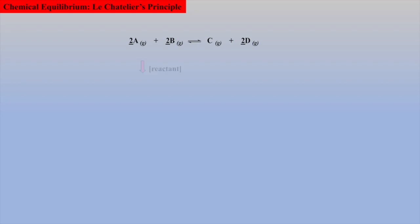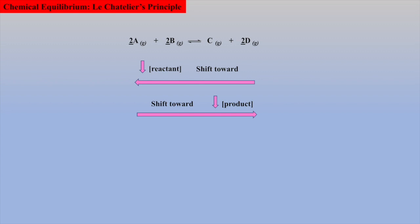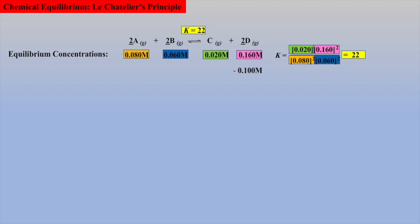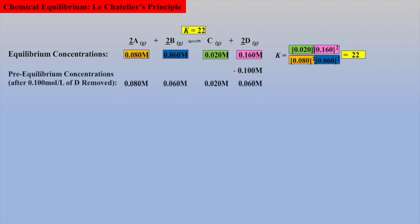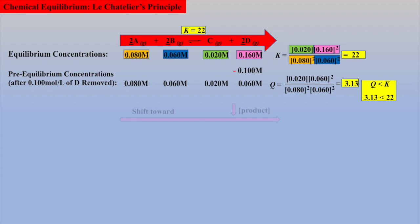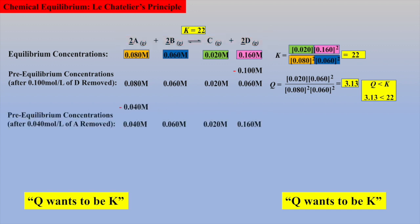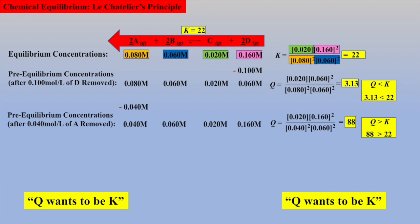Now let's mathematically prove that if we lower the concentration of a reactant or of a product, the shift will be toward the removal. In this conceptual reaction, let's assume these equilibrium concentrations and calculate a K value for this temperature. If we remove some of product D, then using these new concentrations and calculating a Q value, we see that Q is less than K. Thus, we predict a shift to the right will occur toward the removal, as the Q value strives to become the K value. Conversely, if we remove some of reactant A, then using the new concentrations and calculating Q, we see that Q is greater than K, and thus a shift toward reactants — toward the removal of reactant — will occur.